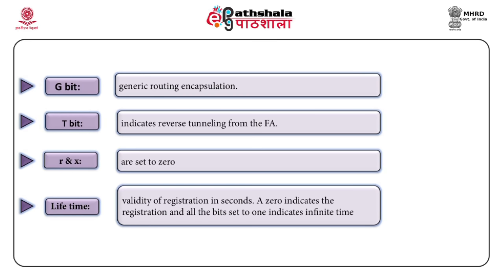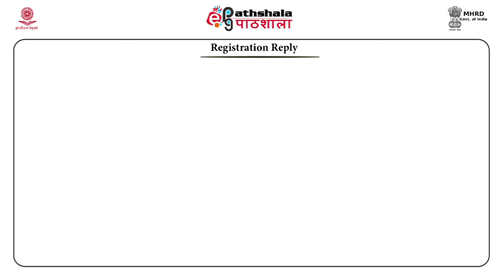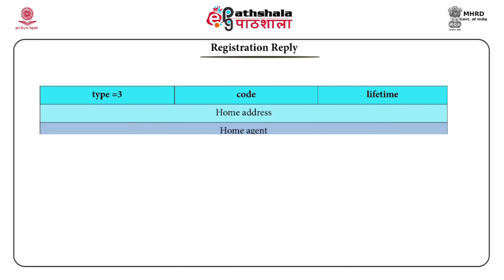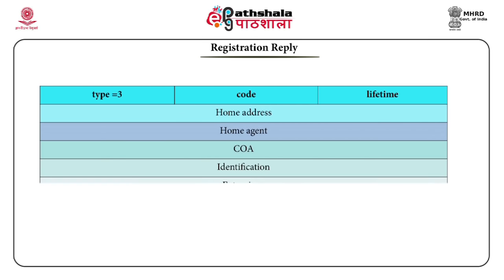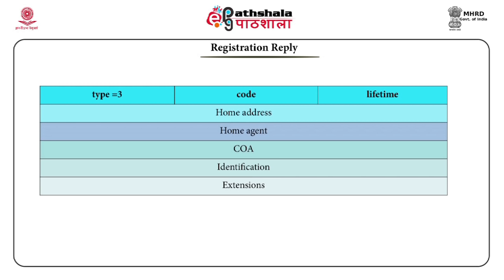Registration messages between the mobile node and the home agent must be authenticated to prevent any malicious node from disrupting traffic by sending bogus or fake care of addresses. Using a 128-bit secret key and the HMAC MD5 hashing algorithm, a digital signature is generated. Each mobile node and home agent shares a common secret which makes the digital signature unique and allows the agent to authenticate the mobile node. The registration reply is also done using UDP packets.